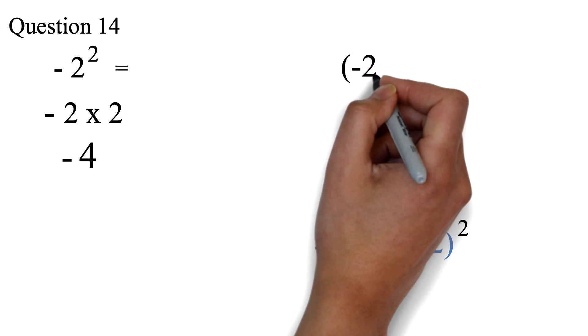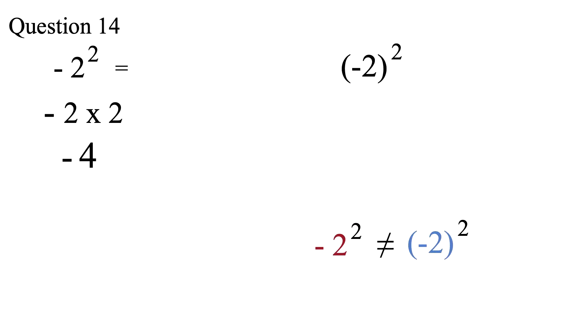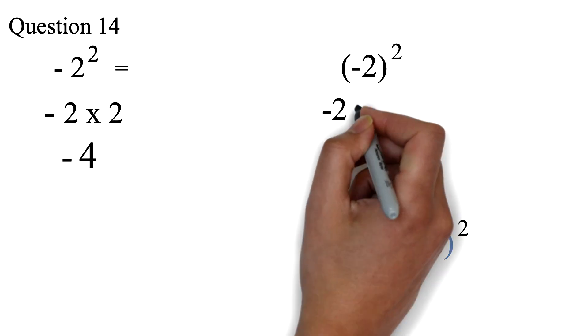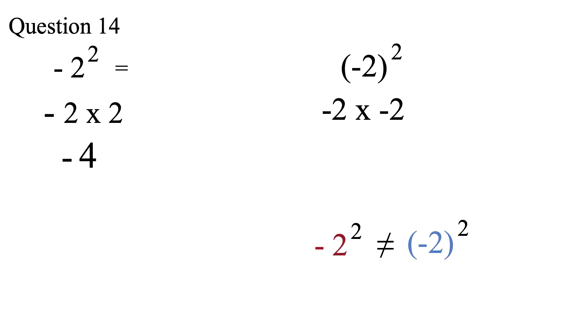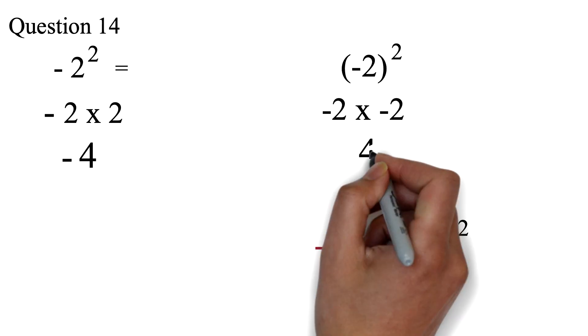If we are given negative 2 exponent 2 with the negative 2 in parentheses, this means that the exponent is affecting the negative and the 2. So we will have negative 2 times negative 2. We learned earlier that when you multiply two numbers that are negative, you'll get a positive. So this is positive 4.